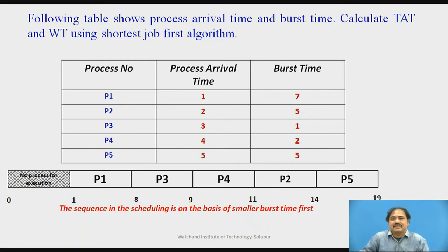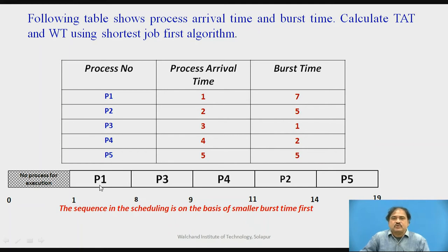That interval is unused. At the first time instant, only P1 is ready in the ready queue, so there is no other selection parameter and we go for P1 execution. P1 enters the running queue at the first time instant. The CPU executes P1 completely, ending at the 8th time instant, because the burst time for P1 is 7 time units.